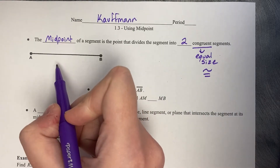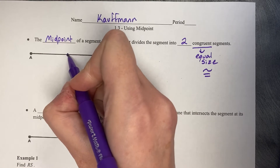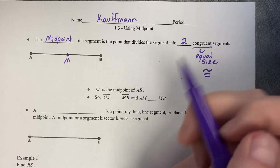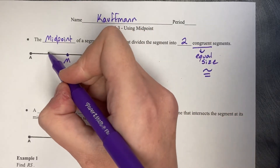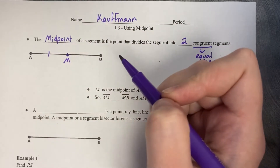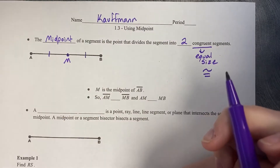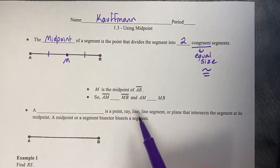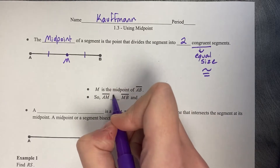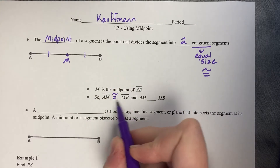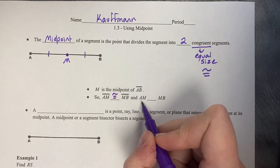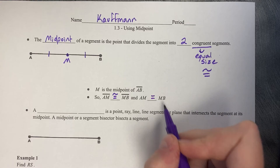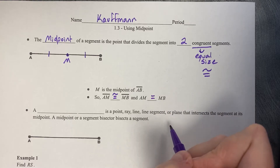If we want to put this on a diagram, you need to eyeball where the middle is. But how do you announce to the world that that is in fact the middle? You use what's called tick marks to say that AM is congruent to MB. So M is the midpoint of AB, meaning AM is congruent to MB. The segments are congruent, and that means their lengths are equal — AM equals MB.